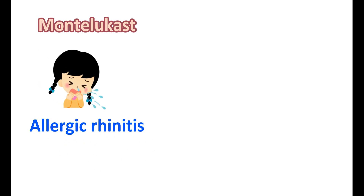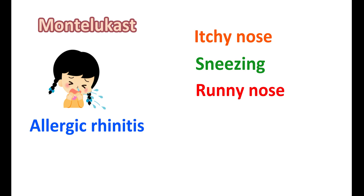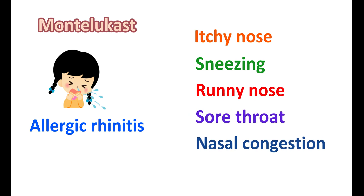Another clinical use of Montelukast is in the treatment of allergic rhinitis, also called seasonal rhinitis, which is associated with increased allergic response. Symptoms include itchy nose, itchy eyes, sneezing, runny nose, sore throat, and nasal congestion. However, Montelukast should not be used as first line for treating allergic rhinitis. Normally, these cold-like symptoms can be treated by antihistamines. Only when antihistamines are unable to control the symptoms should Montelukast be given.